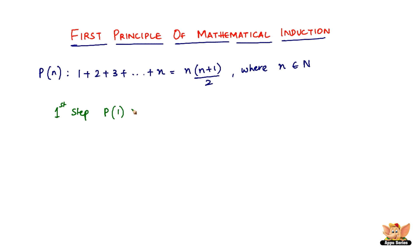P of 1 equals 1 times 1 plus 1 divided by 2, which is 1 plus 1 is 2, 2 into 1 is 2, so 2 divided by 2 is 1. So the sum of 1 is just 1. You substitute 2, it gives the sum of the first two numbers; substitute 3, the first three numbers, and so on. So the base case is proved now.